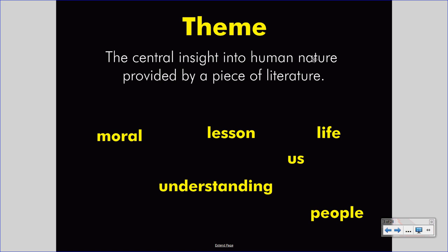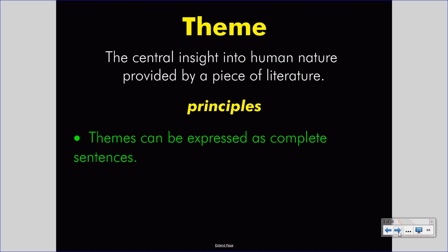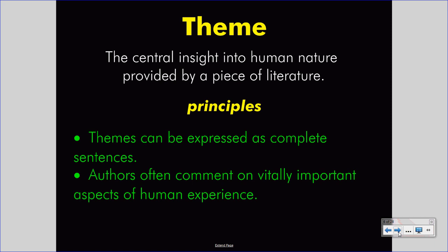That's what's meant by central insight into human nature provided by a piece of literature. Central insight means it's the message that the author wants to give, and human nature means that it's about us and our lives. There are some principles we should remember when talking about theme. First, themes can be expressed as complete sentences. If I ask you to write a theme, I will be asking for a complete sentence — a full message about human nature. Secondly, authors often comment on vitally important aspects of human experience, such as the experience of being honest in a painful situation — things that are important to us and that we really need to discuss.